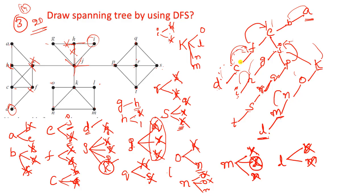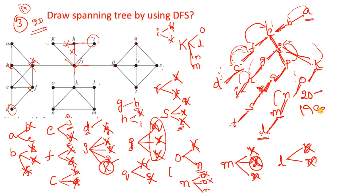Count all vertices: 1, 2, 3, 4, 5, 6, 7, 8, 9, 10, 11, 12, 13, 14, 15, 16, 17, 18, 19, 20 elements are there. Now check how many edges are there in this spanning tree: 1, 2, 3, 4, 5, 6, 7, 8, 9, 10, 11, 12, 13, 14, 15, 16, 17, 18, 19. So 20 vertices and 19 edges.